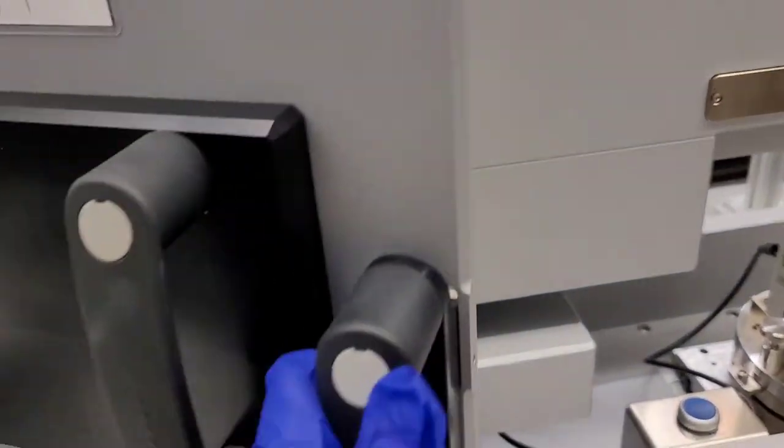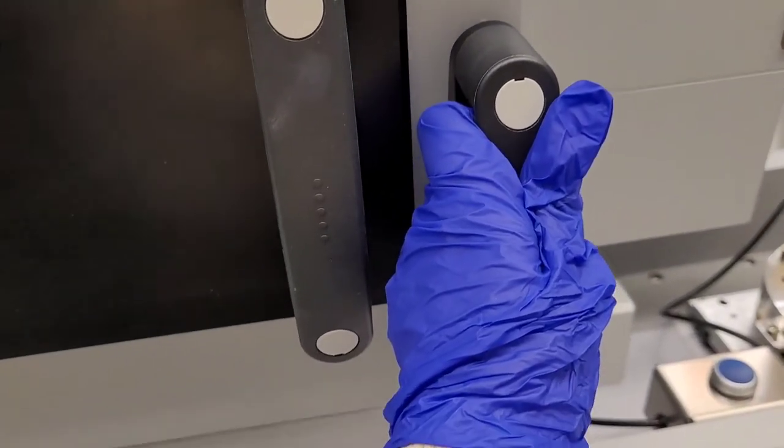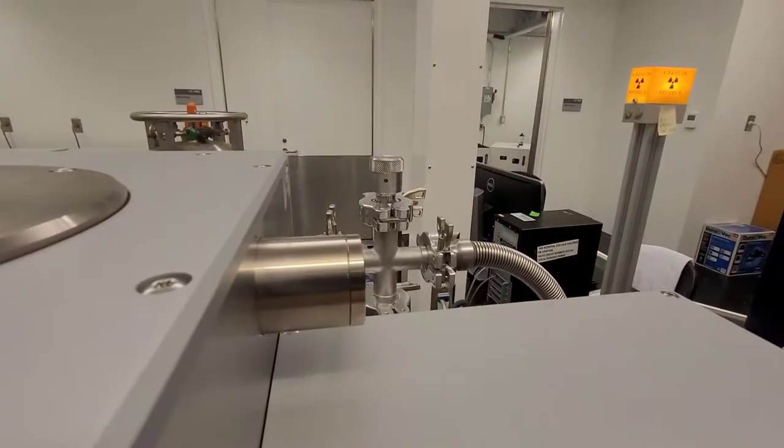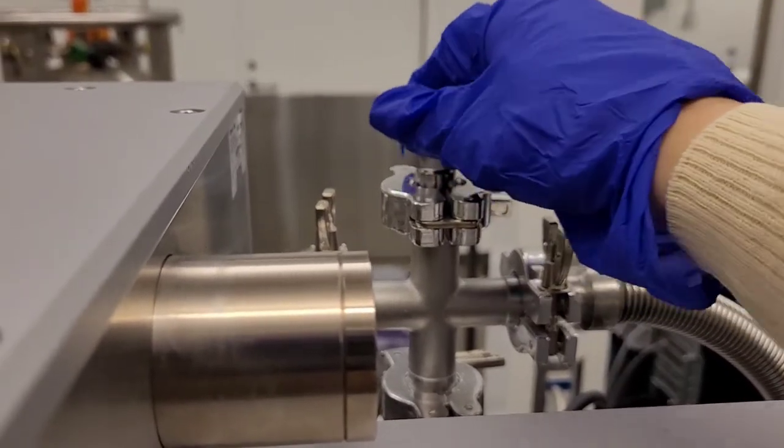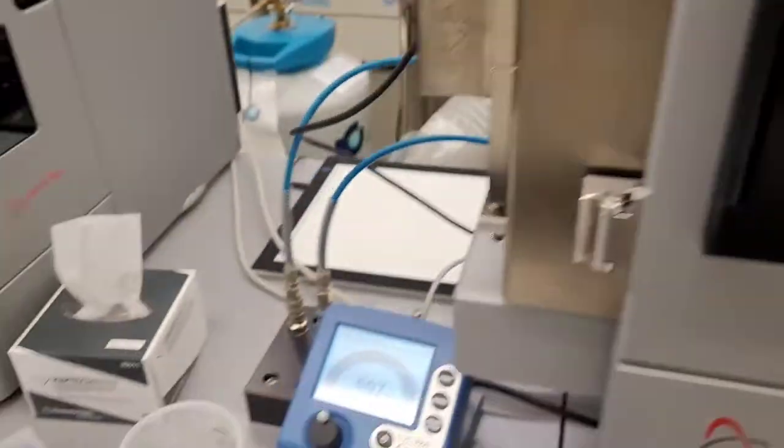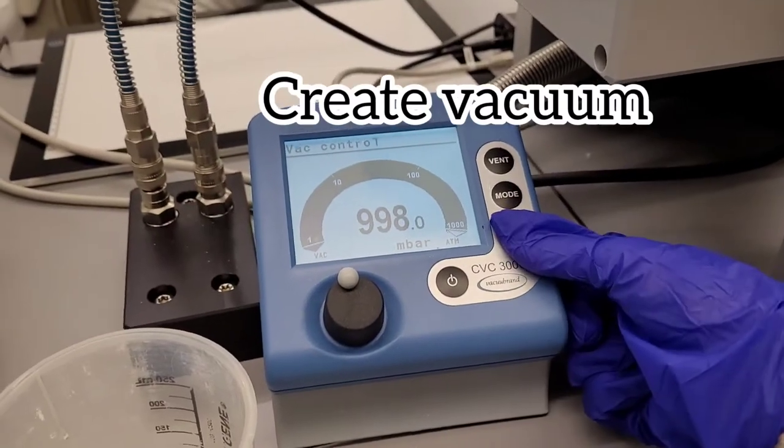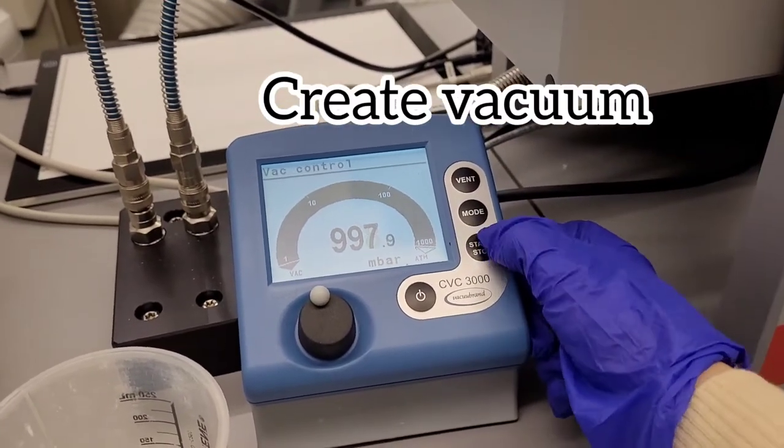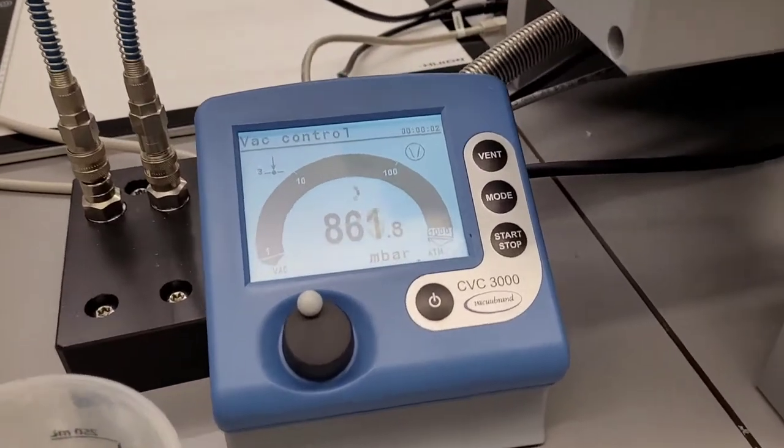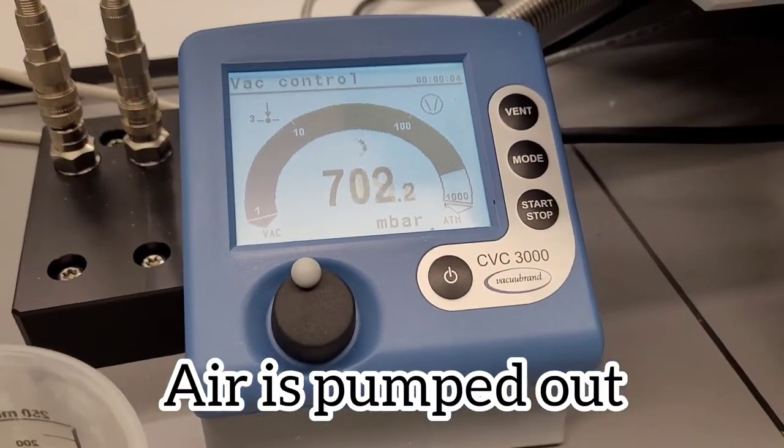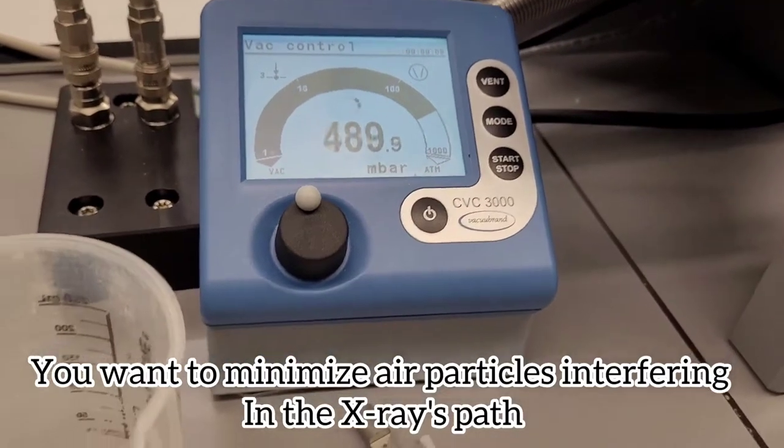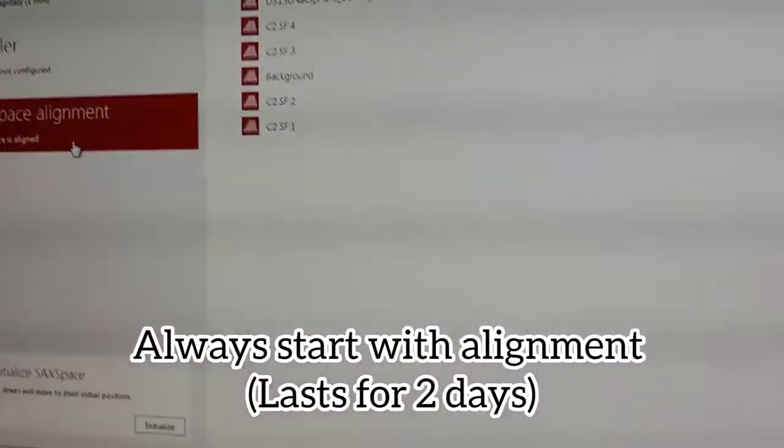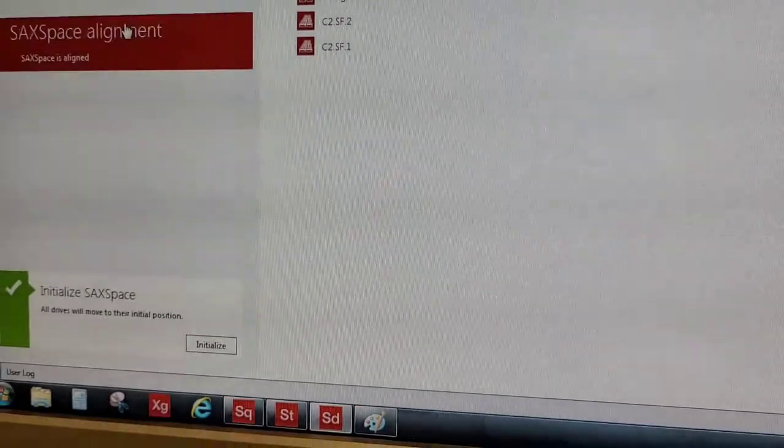Then close the door and you want to create a vacuum inside. So first you close this little thing and then you press the button that will pump air outside of the box where your sample is in it. This is because you don't want air molecules to be on the way of the x-ray beam.